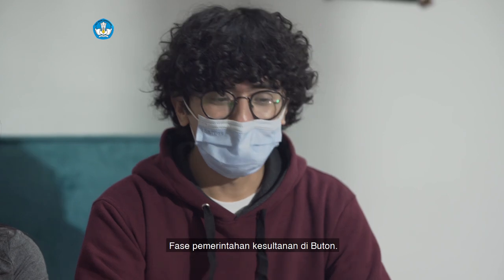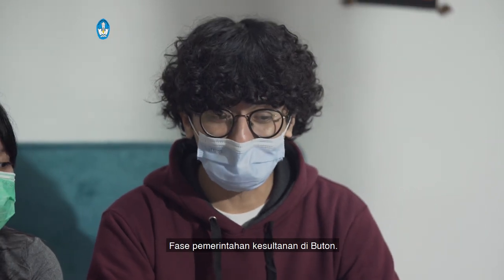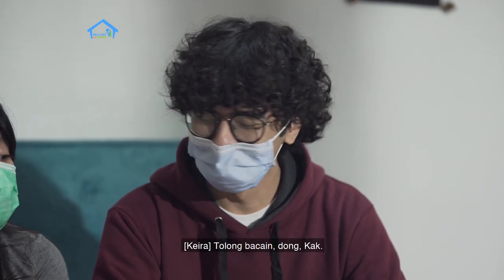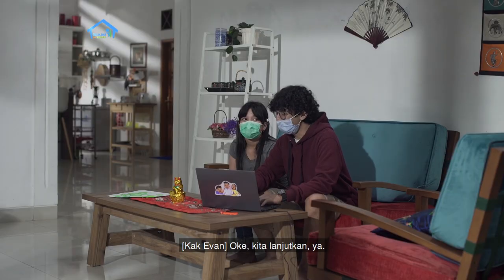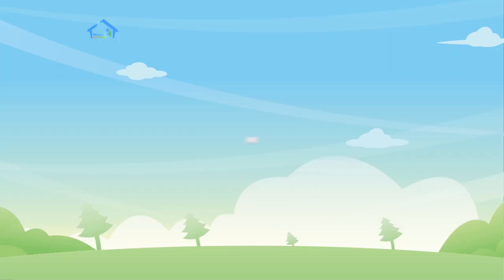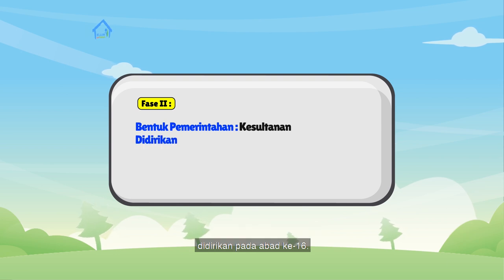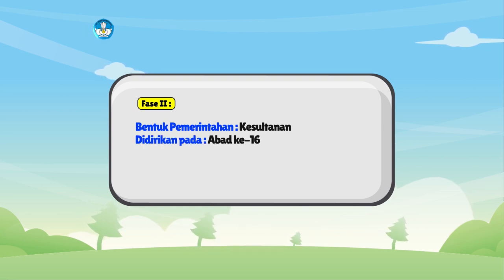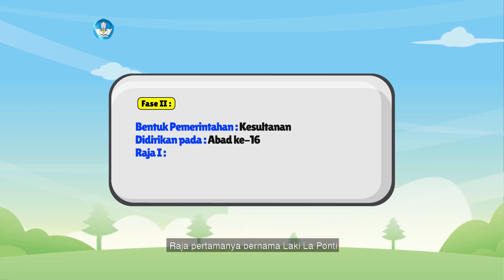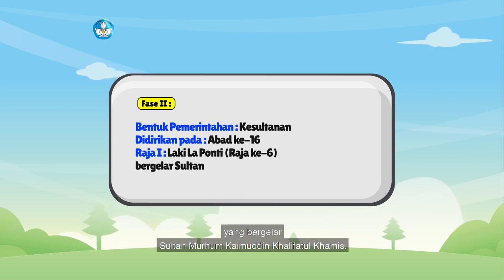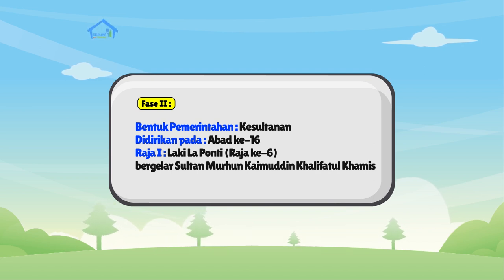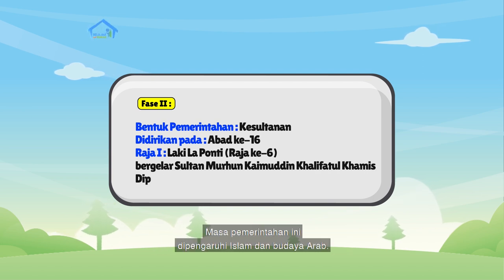Dapat fase pemerintahan kesultanan di Buton. Tolong bacain dong Kak. Oke, kita lanjutkan ya. Bentuk pemerintahan kesultanan ini didirikan pada abad ke-16. Raja pertamanya bernama Laki Laponti yang bergelar Sultan Murhum Kaimuddin Khalifatul Hamis. Masa pemerintahan ini dipengaruhi Islam dan budaya Arab.